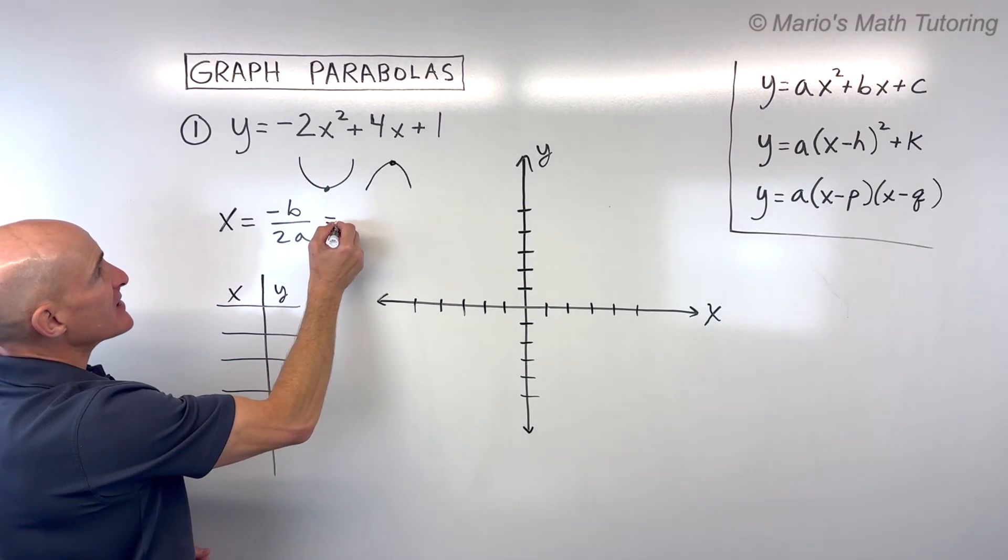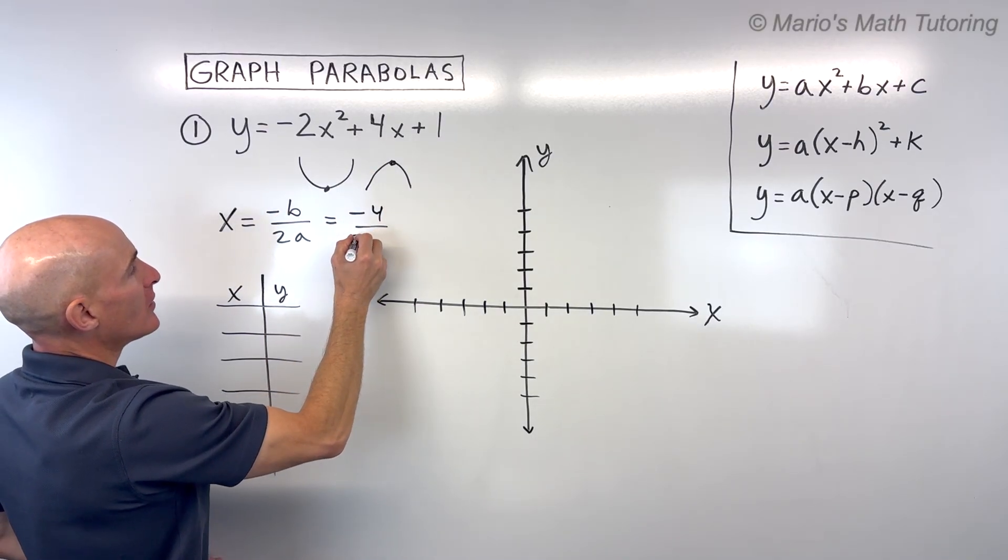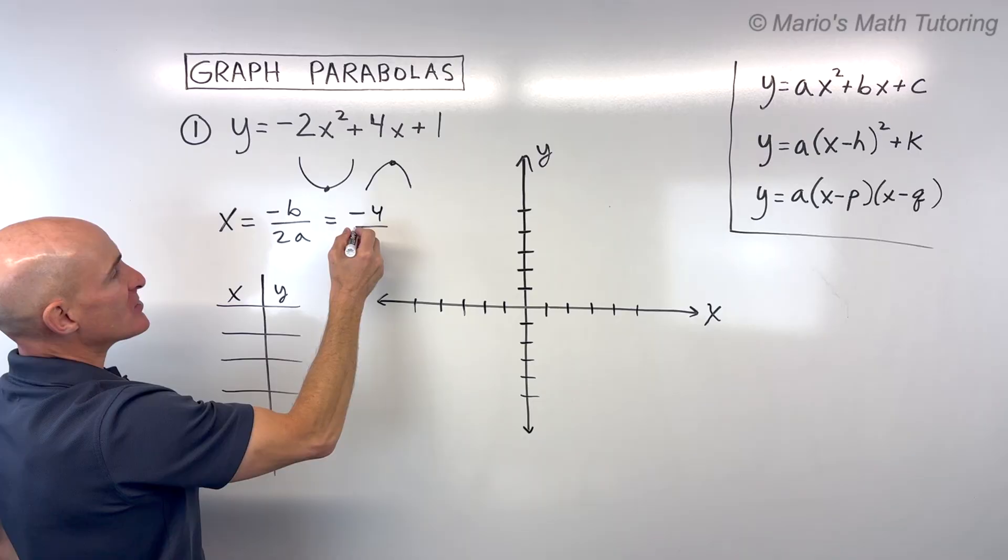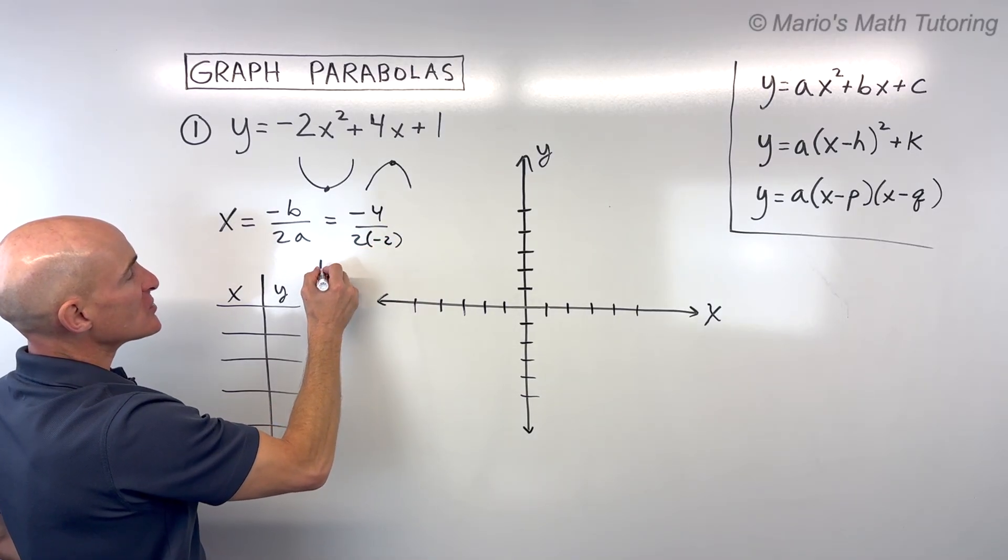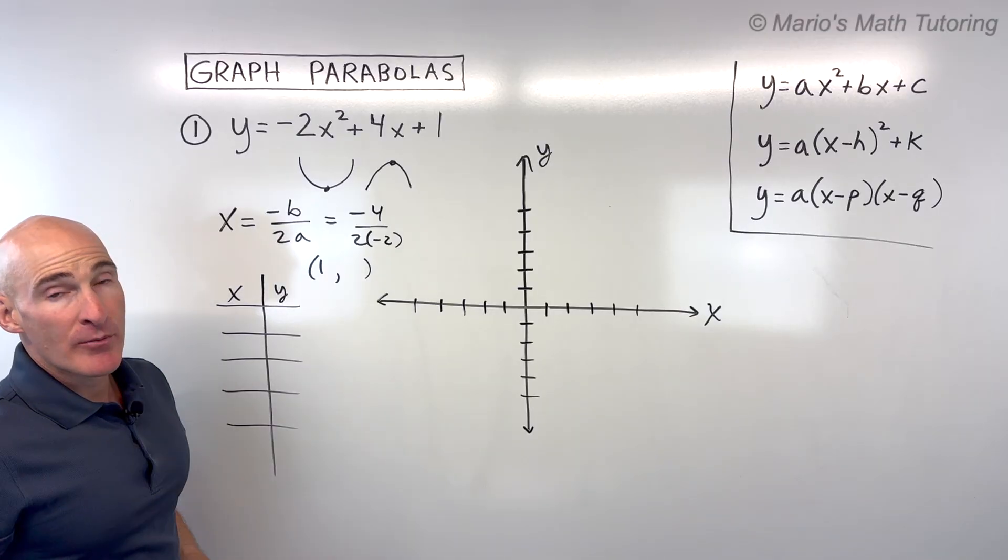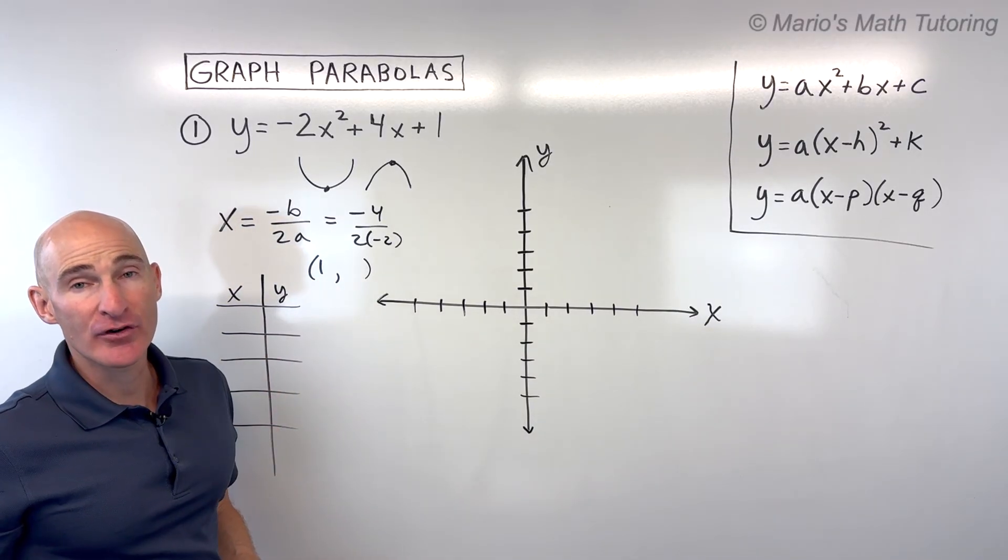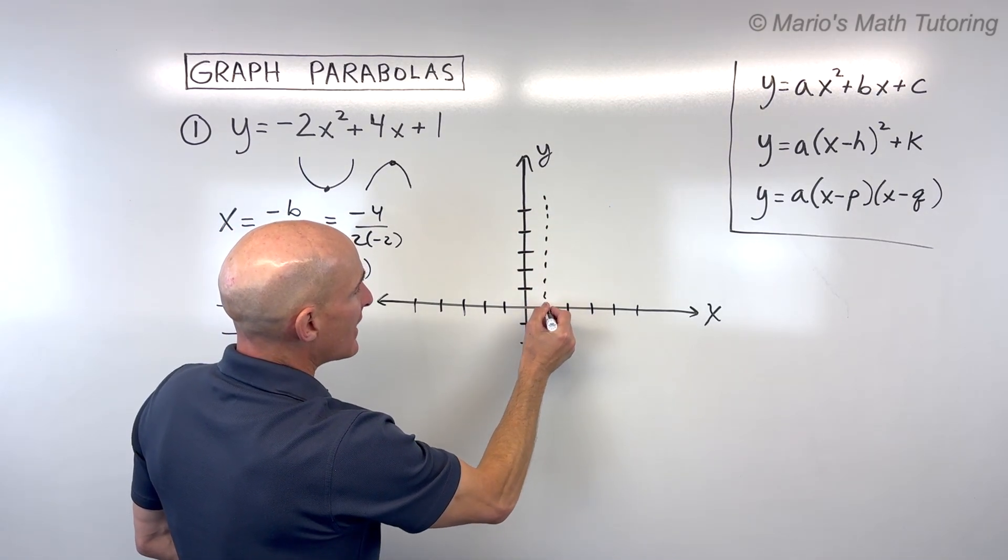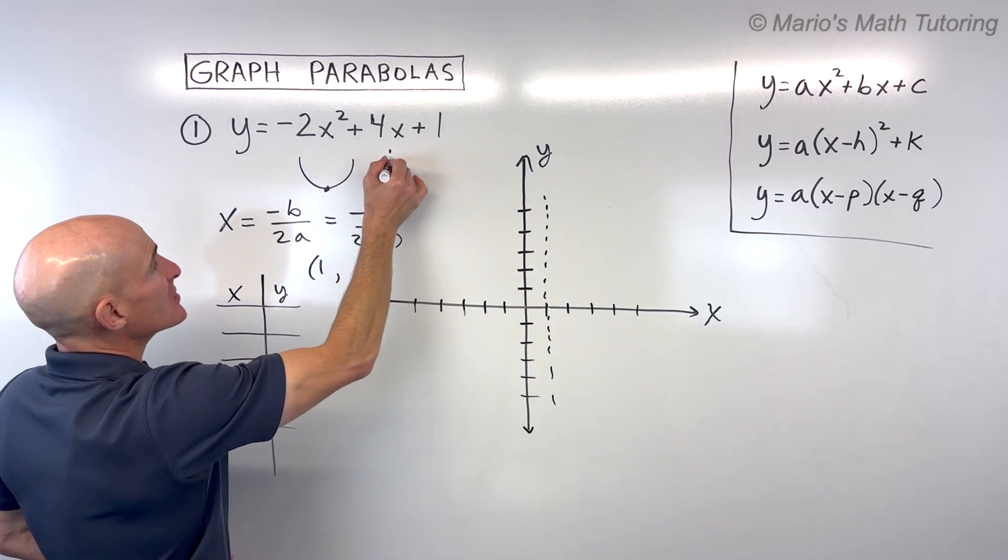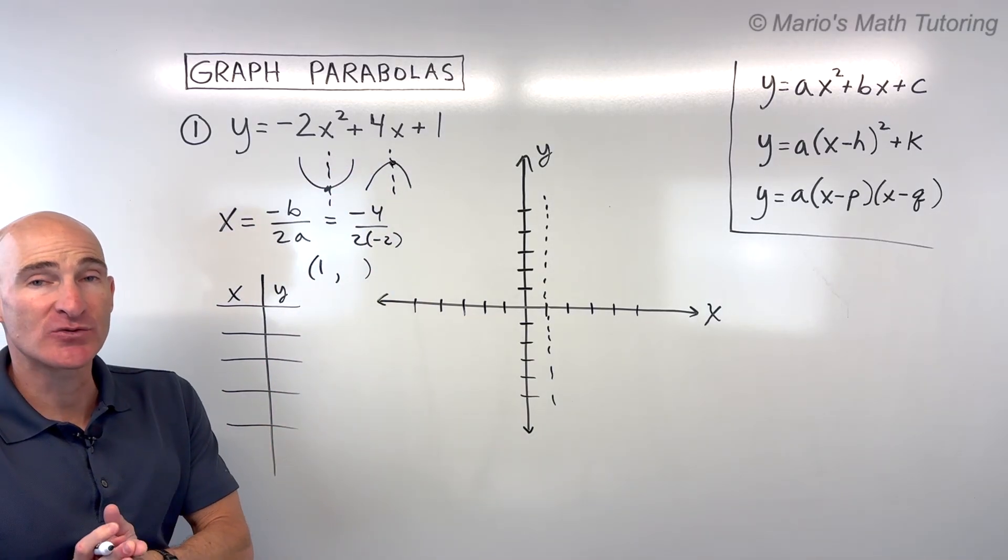So in this case, this is our b value, so negative times 4 gives us negative 4 over 2 times a, which is negative 2. That's negative 4 over negative 4, which is 1. So what that 1 represents is our axis of symmetry. It's also the x-coordinate of our vertex. So if we go over here to x equals 1, we can draw a dashed or dotted line. That line is going to divide our parabola in half. If we fold it over, that line is going to match with itself.